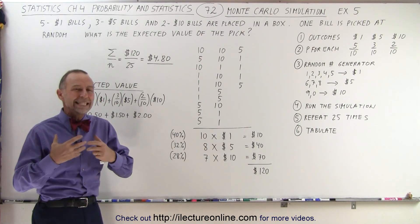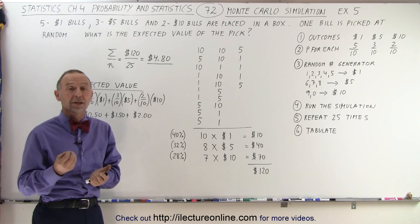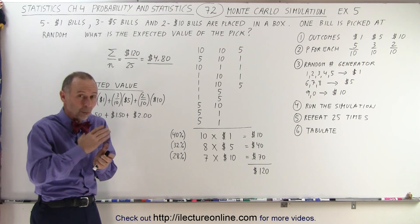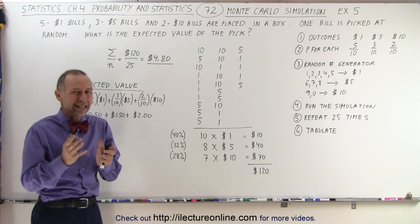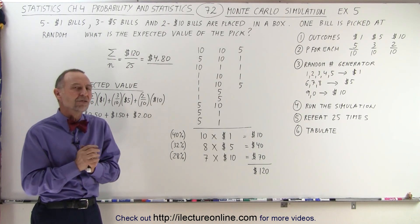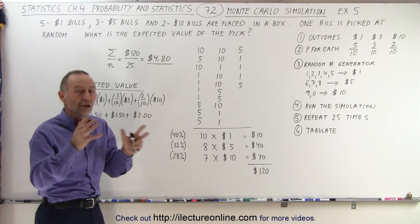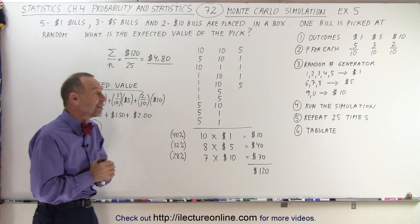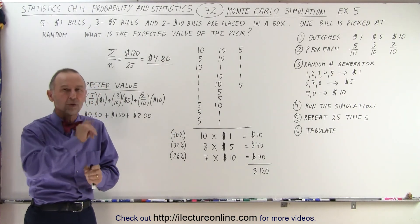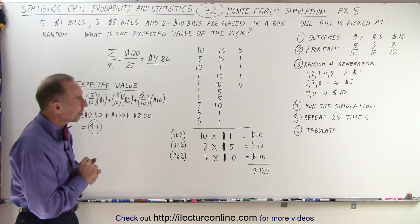Now, what would be the expected value that we pull out of the box? It turns out the expected value will not be a one, a five, or a ten. It'll be some probability calculation averaged out over the number of bills, and depending upon how many of each that we have. But to figure that out, we could also run a Monte Carlo simulation.